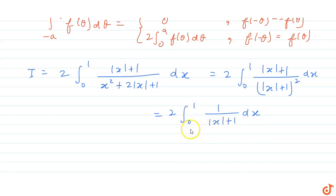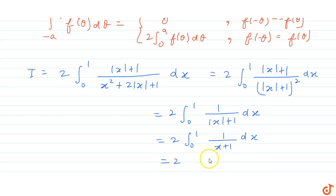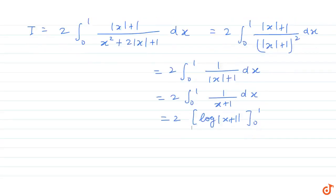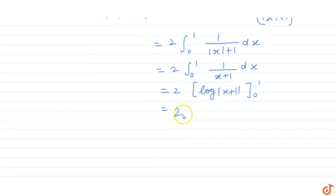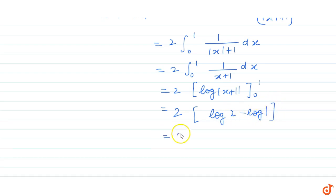From 0 to 1, |x| is positive, so this equals 2 times the integral from 0 to 1 of 1/(x + 1) dx. The integral of 1/x is log x, so we get 2 times [log|x + 1|] from 0 to 1, which equals 2 times (log 2 - log 1). Since log 1 = 0, the value of integral I is 2 log 2.